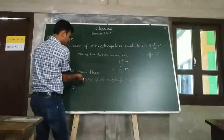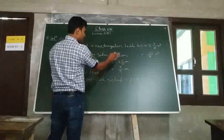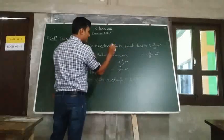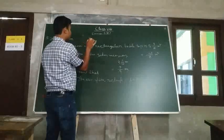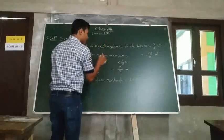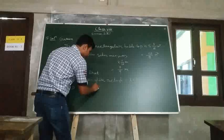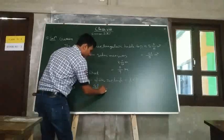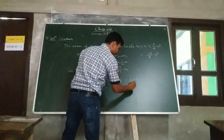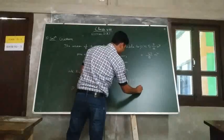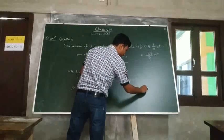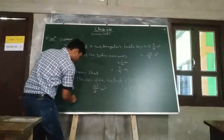So we can write 43/8 meter square for the area of the rectangular table top. 43/8 meter square equals length, which we have to find, times breadth, which is given as 9/4 meter.